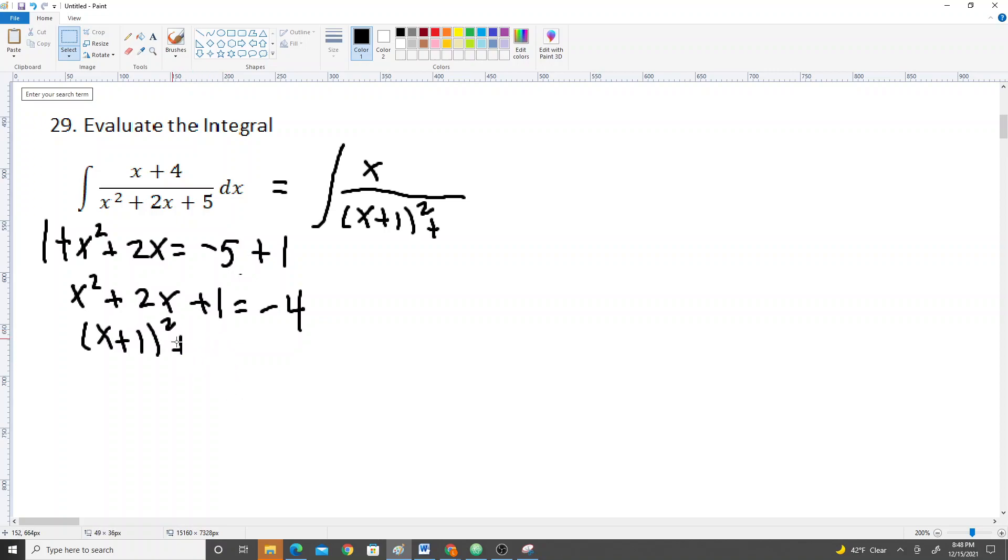One small mistake was, this should be x plus 1 squared, and this should be, right now this is minus 5, because I have to add 1, and this should be 4. There we go.